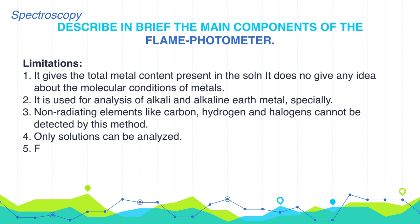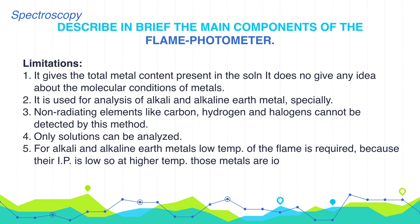For alkali and alkaline earth metals, low temperature of the flame is required because their ionization potential is low. At higher temperature, those metals are ionized. This ionization decreases the intensity of the light emitted, so low temperature is required.